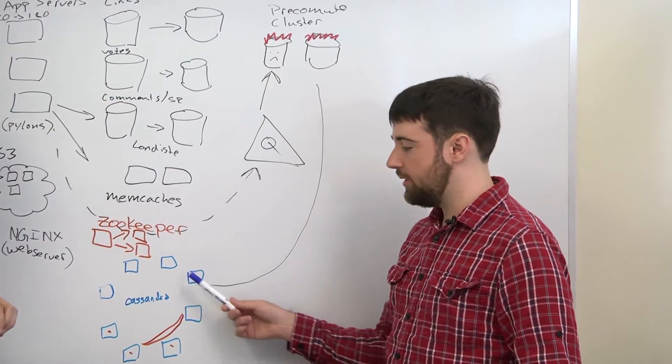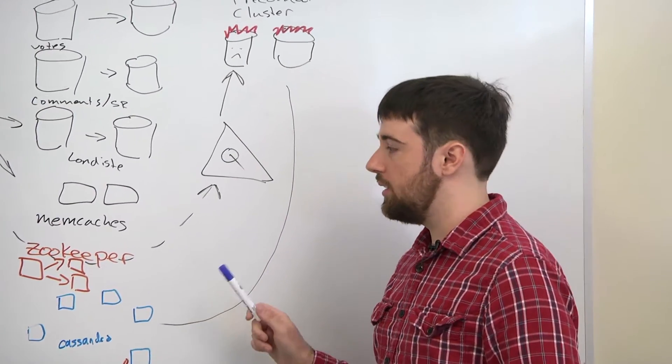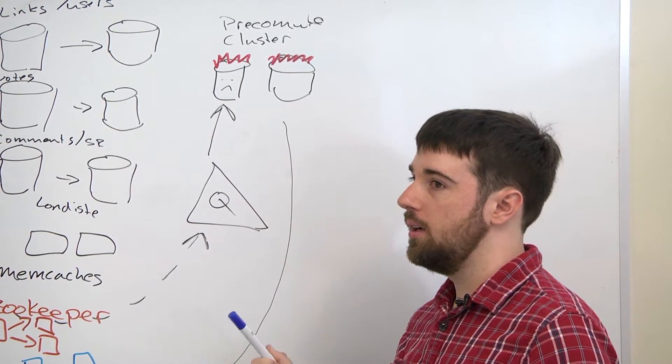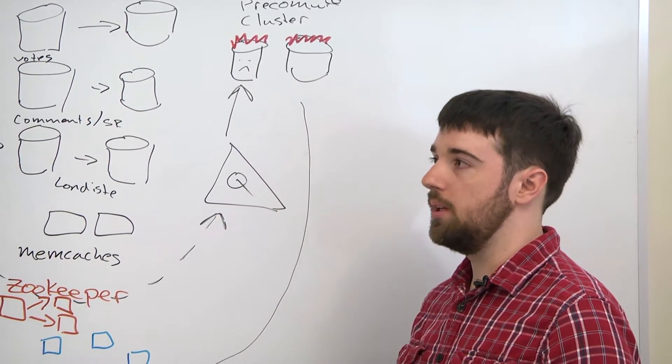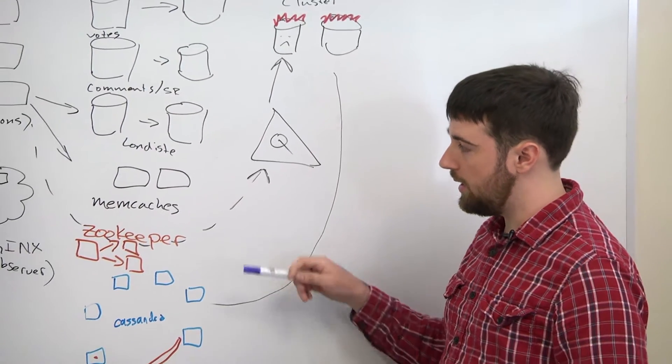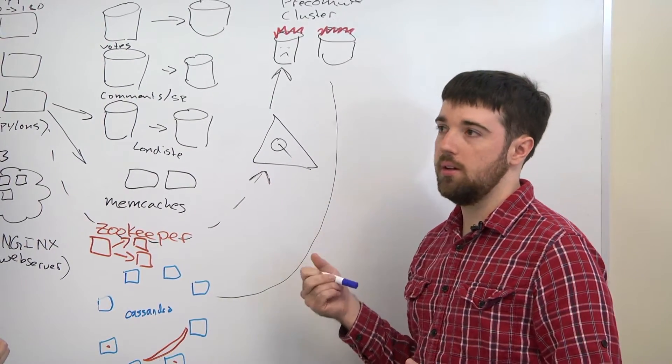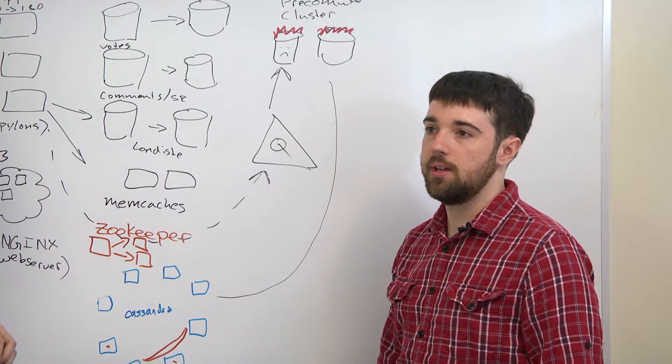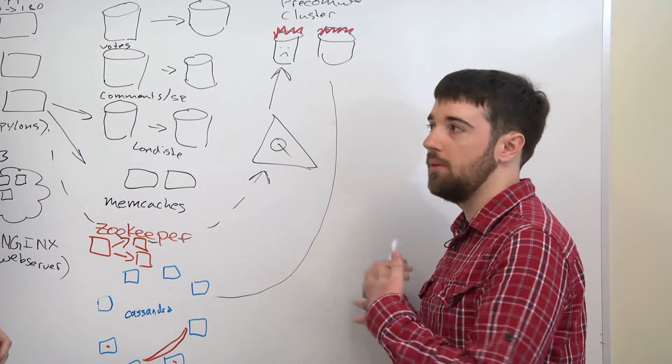In the process of moving to Cassandra, the system for the pre-computed queries - a lot more of them were mutated in place. So what the app will do when you remove something from your saved links is it has to be taken out of your saved page.